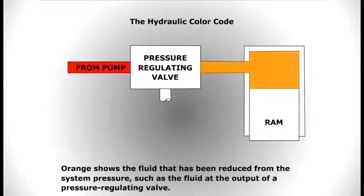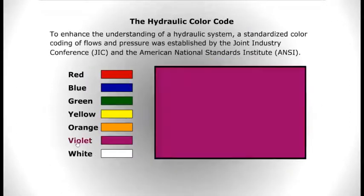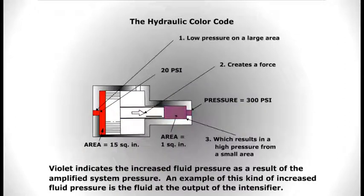Violet indicates the increased fluid pressure as a result of the amplified system pressure. An example of this kind of increased fluid pressure is the fluid at the output of the intensifier.